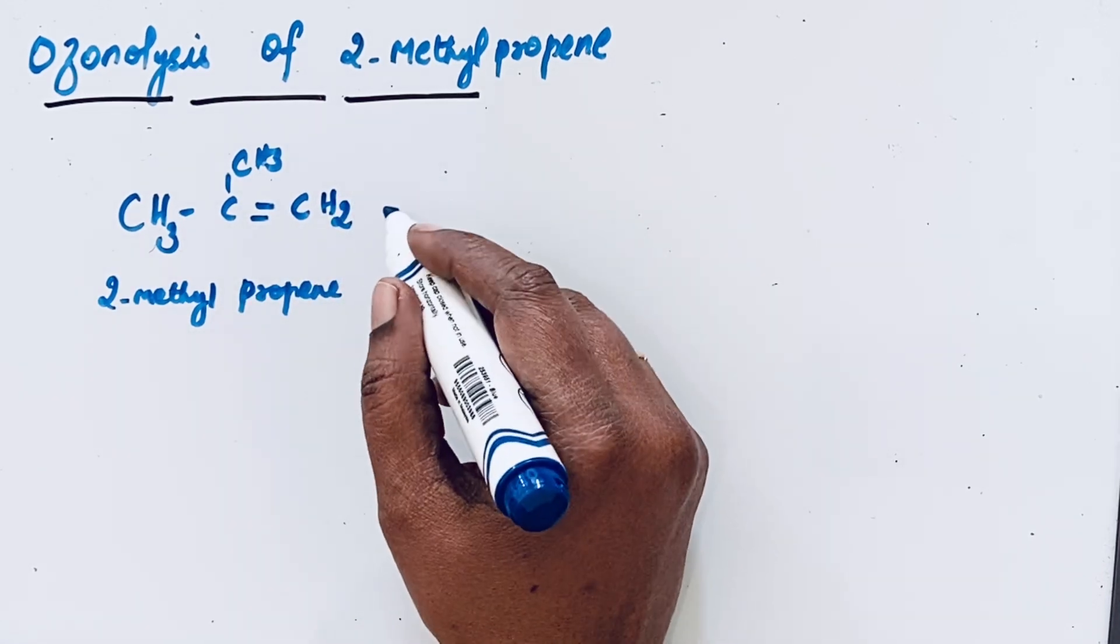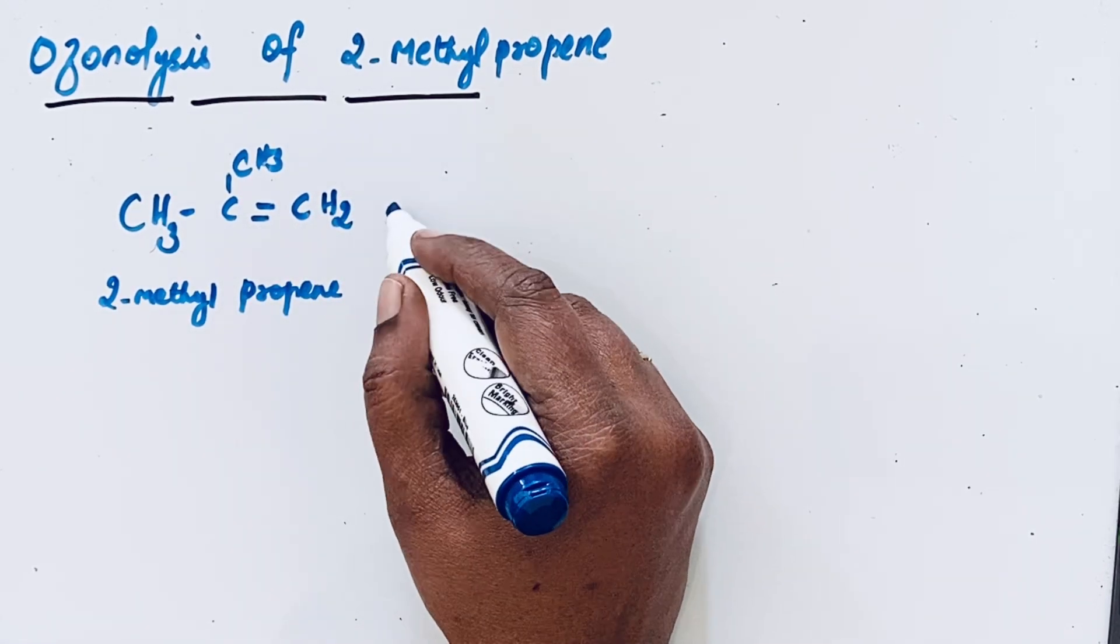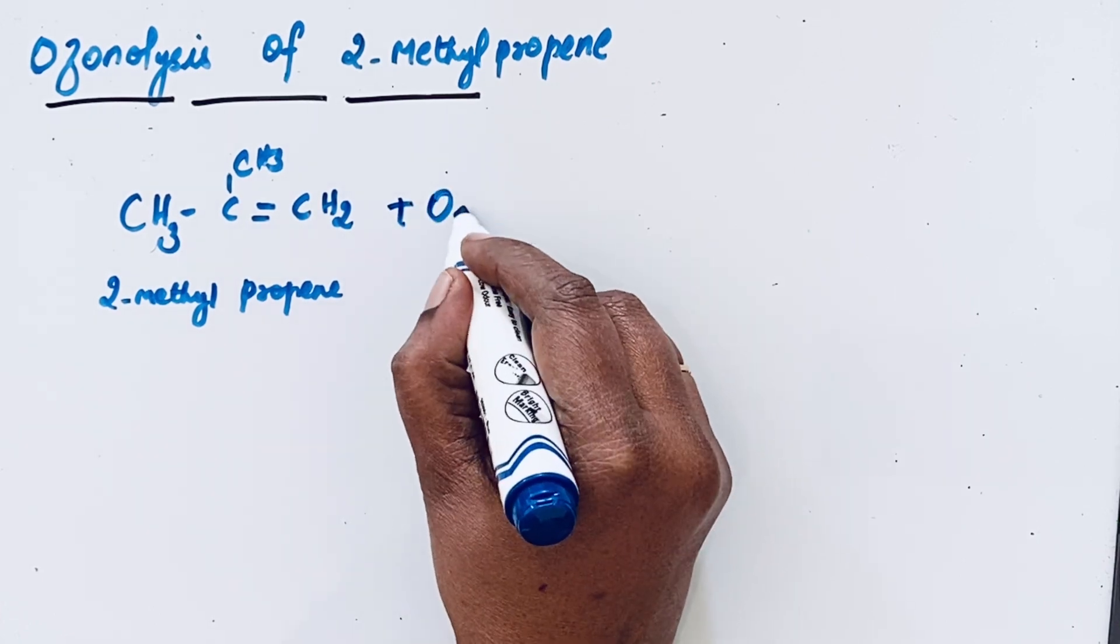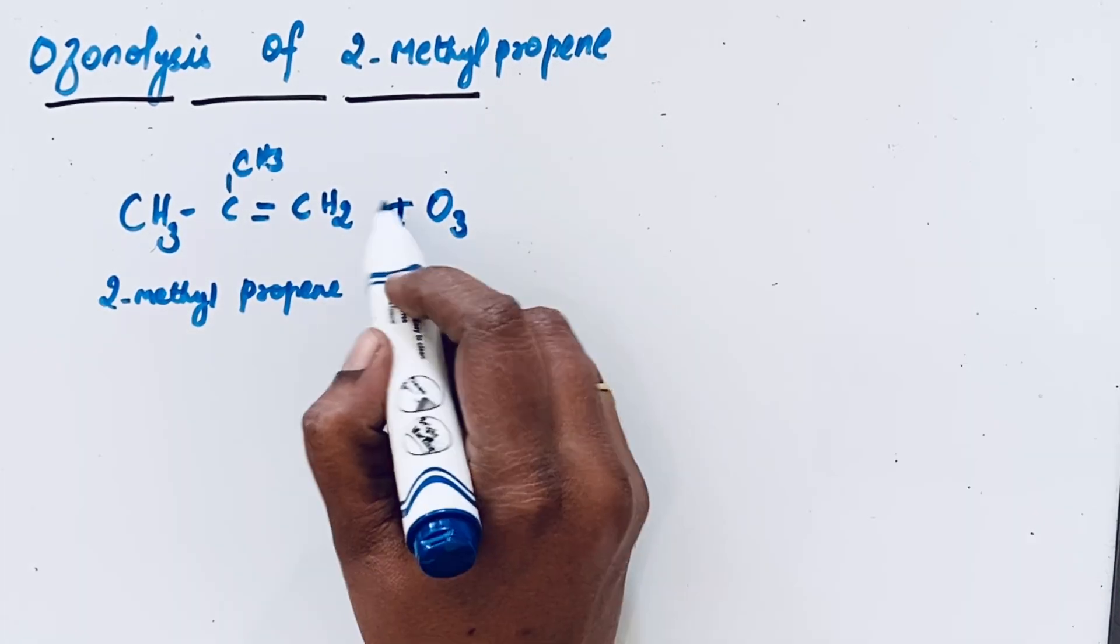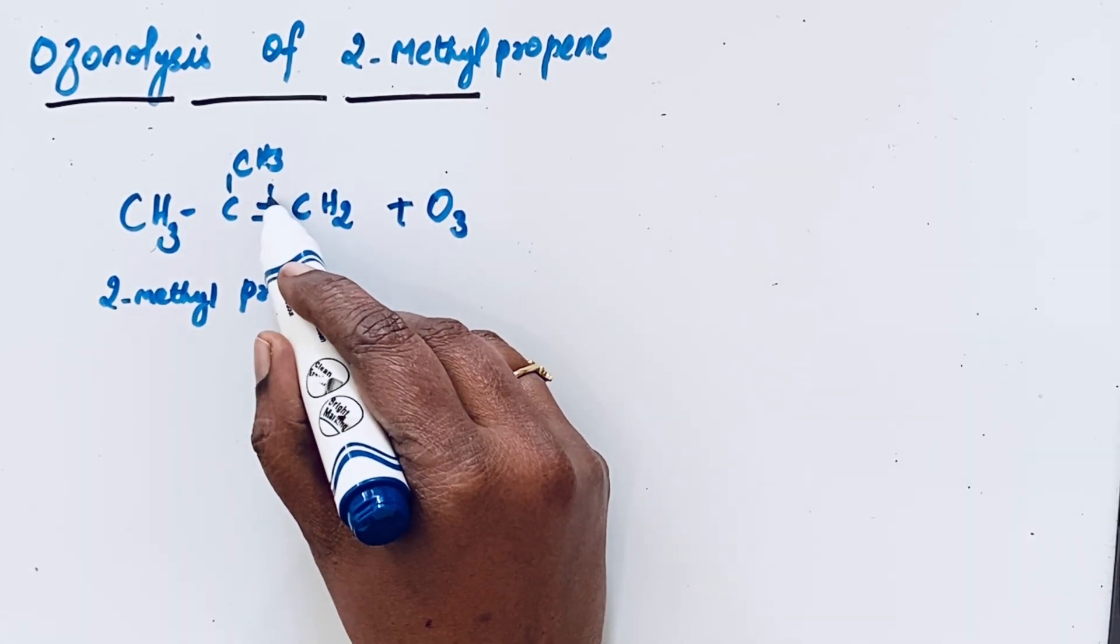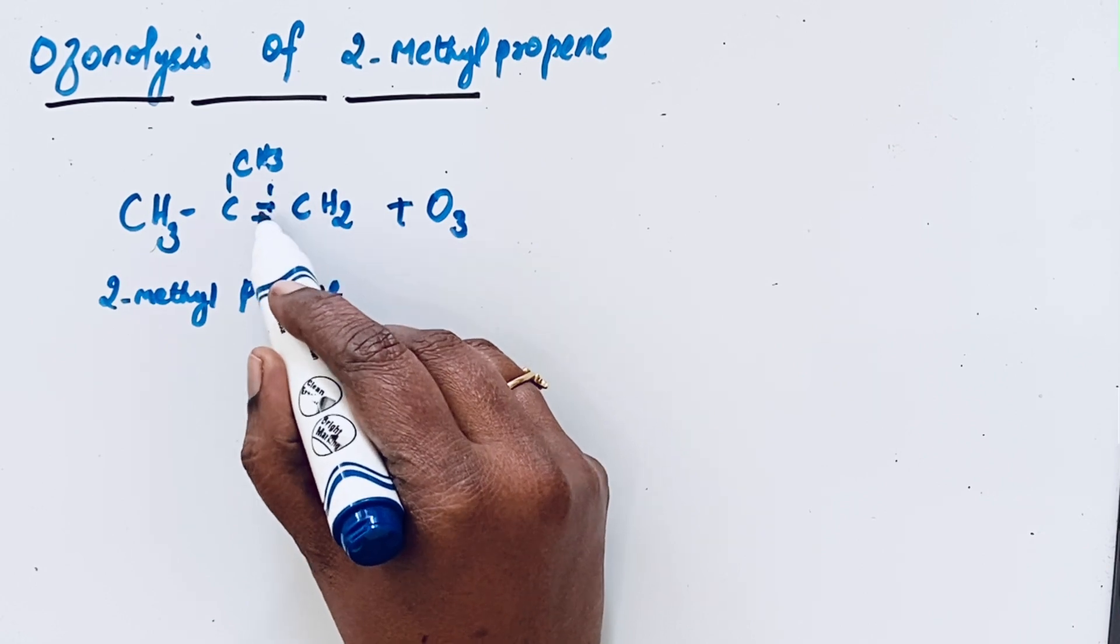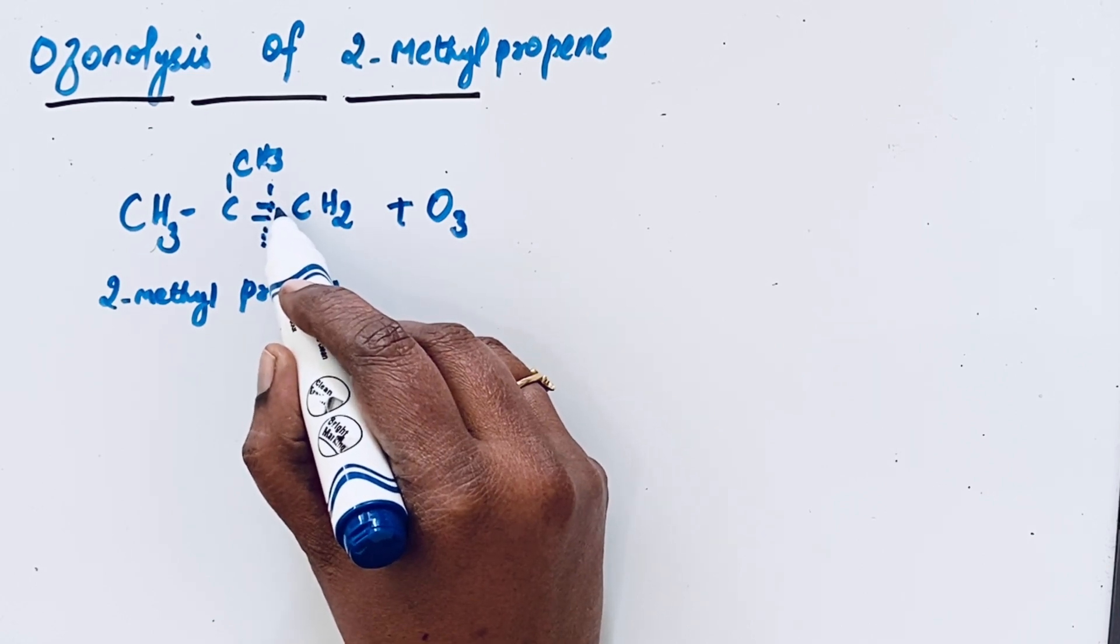So when it is cleaved by O3 molecule, first there is the formation of an intermediate called ozonide. O3 molecule contains 3 oxygen atoms that is added in the place of unsaturated positions.